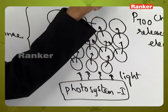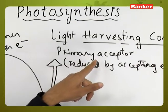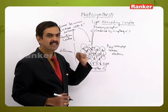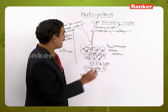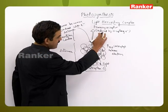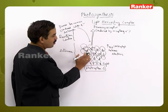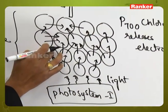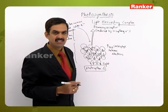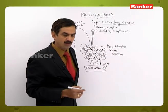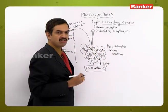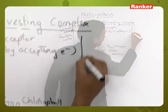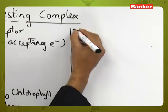The primary acceptor receives the electron and undergoes reduction. P700, acting as the donor, becomes oxidized because of the release of the electron. This is a schematic representation related to PS1. Now let us see the PS2 organization.